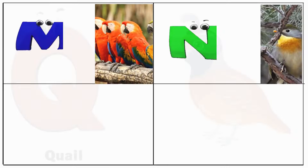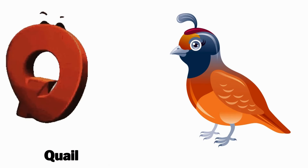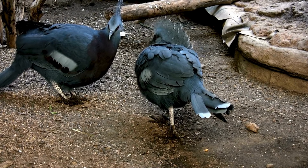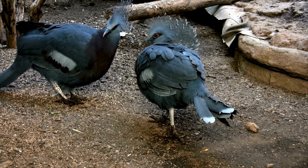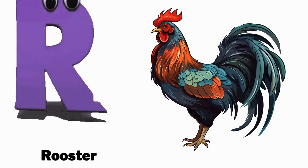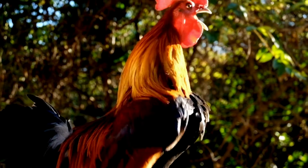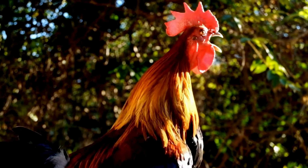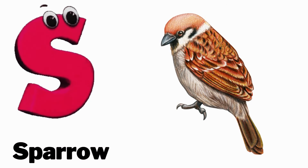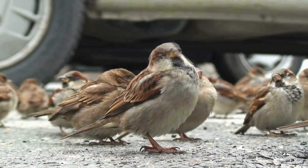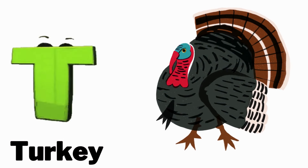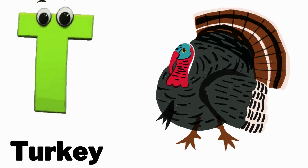Q is for quail, kwuh kwuh quail. R is for rooster, r r rooster. S is for sparrow, s s sparrow. T is for turkey, t t turkey.